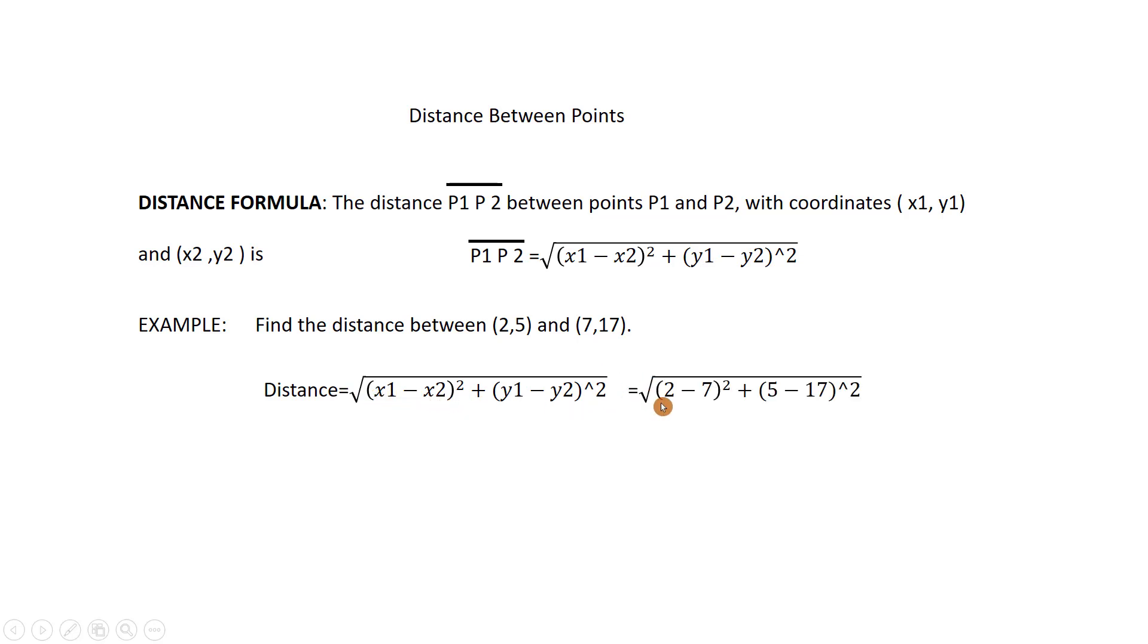The coordinates x1 minus x2 which is 7 squared plus y1 which is 5 minus 17 squared. It equals 13.